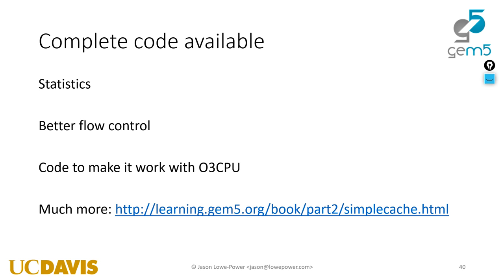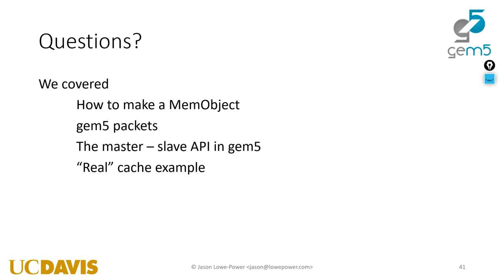The complete cache code is available, and it has statistics for hit, miss, and miss latency. It has better flow control than what we saw in the simple memory object, and it also works with the out-of-order CPU to support multiple requests per cycle. I'm pretty sure I made the cache work with the O3 CPU — if I'm wrong, you can open an issue on GitHub.